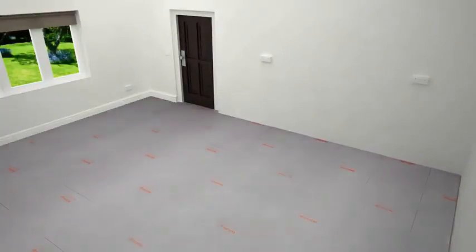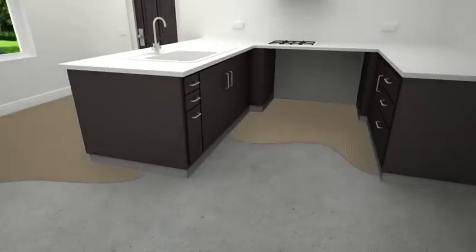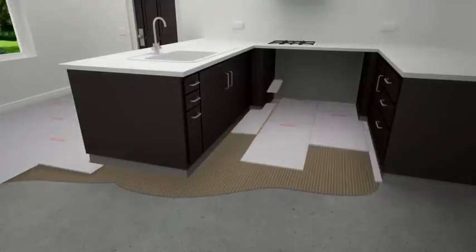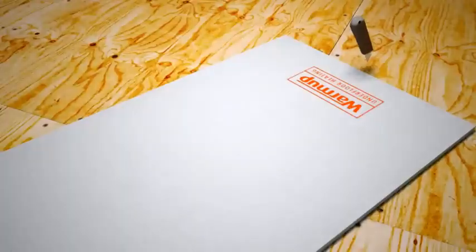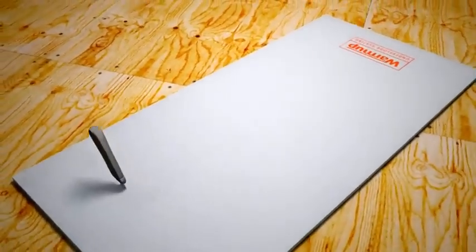In situations where you already have fixtures in place and for renovations, follow the same process and simply cut and place Warmup insulation boards neatly around any objects. The boards can be easily cut with a utility knife to the exact shape required.